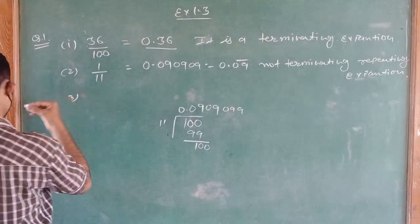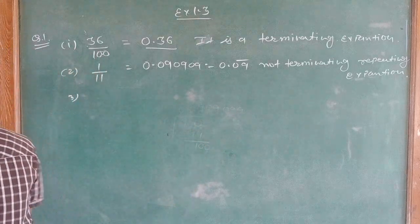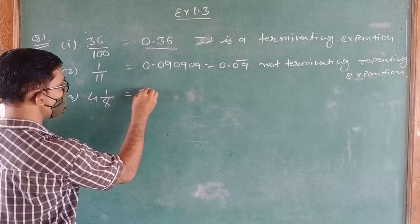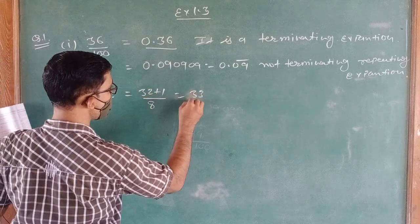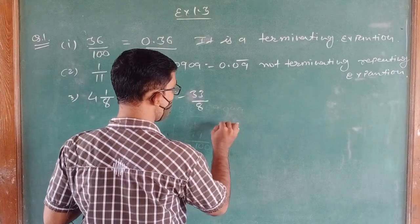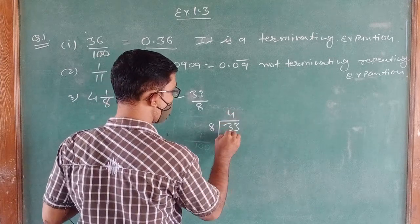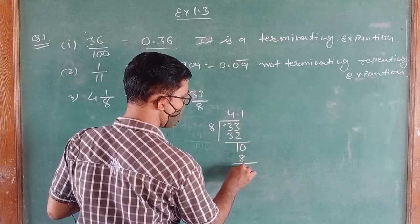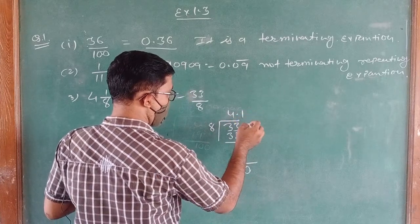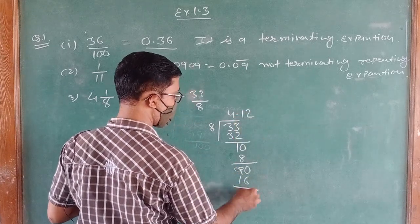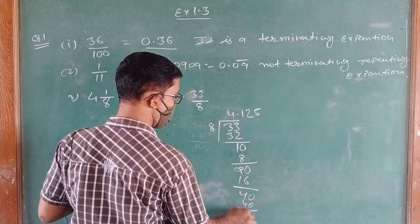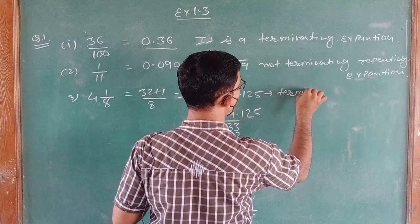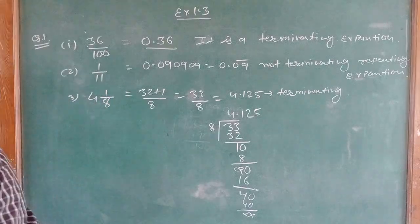Next Question No.3: 4 and 1 upon 8, which means 33 upon 8. चलिए इसको भी हम division करेंगे। 33 divided by 8: 8×4=32, remainder 1; then 8×1=8, 8×2=16, 8×5=40 — answer is 4.125. तो यह Terminating Expansion होगा।